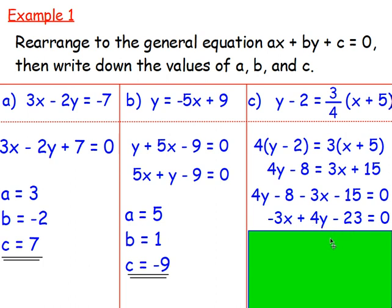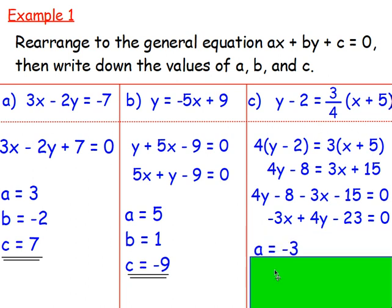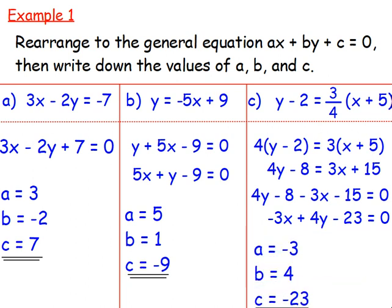That is what the question is asking us for, so you can write down the values of a, b, and c. Again, it's just the coefficients — how many x's, how many y's, and what's the number just on its own. Just check that you do have 0 on the right hand side.